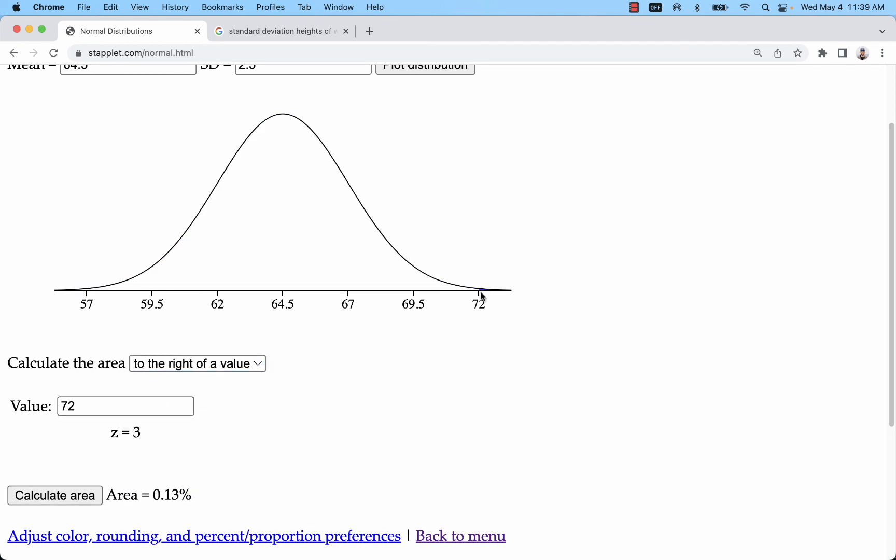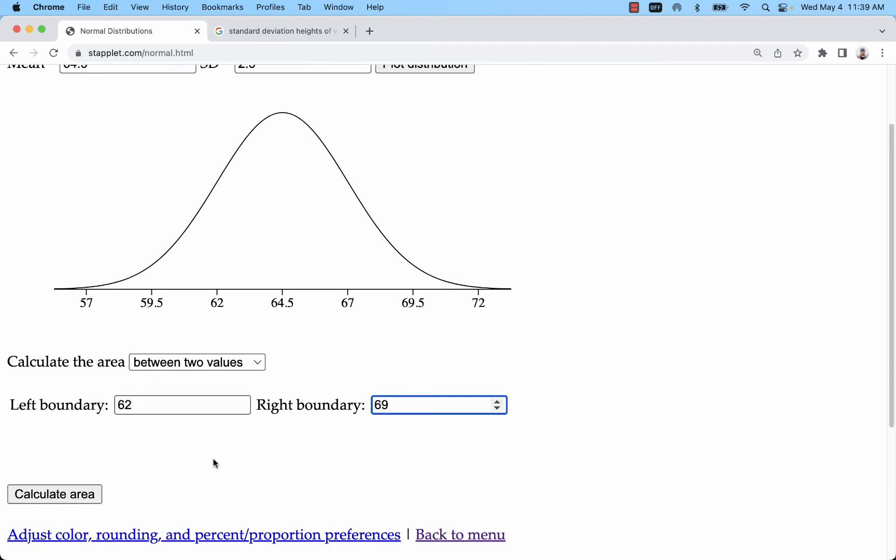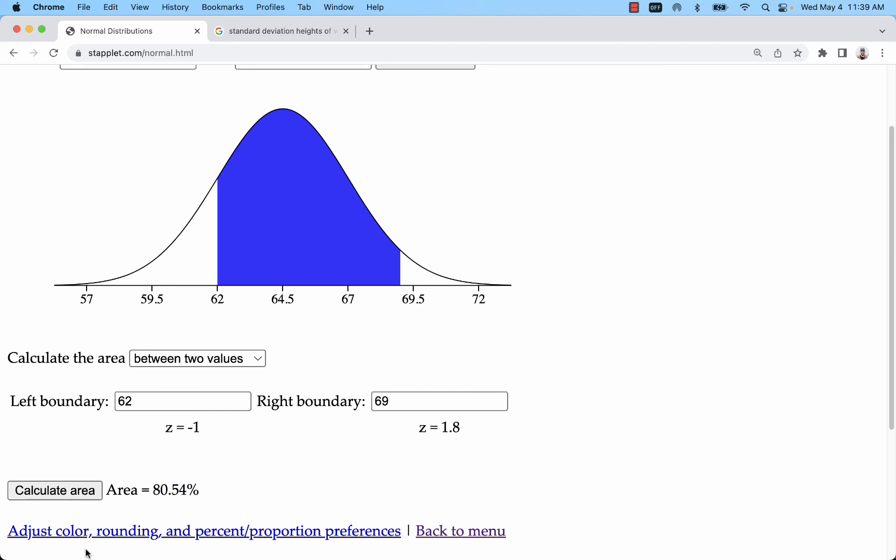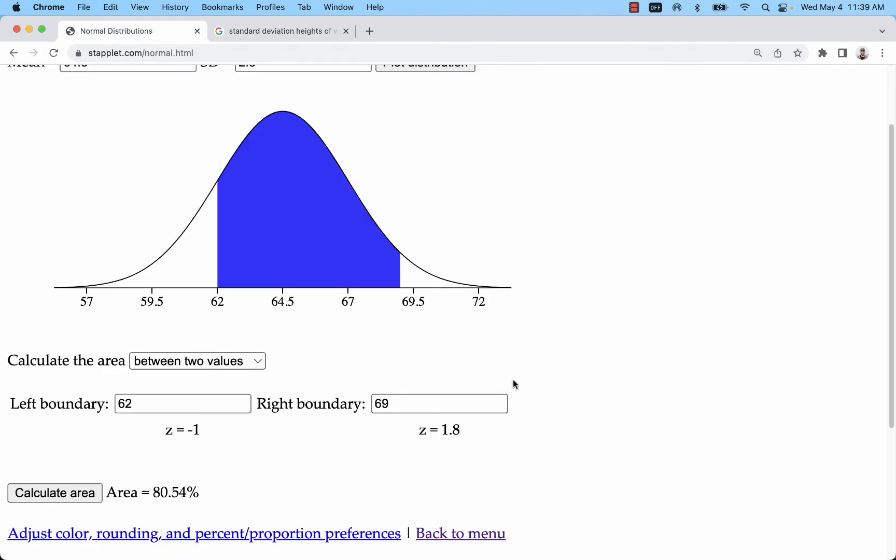So that's very small. That's three standard deviations, 0.13%. In between two values, you can do all kinds of different calculations. This time we're entering in inches or heights and we're looking at probabilities or percentages of the population in the United States, we're looking at women's heights.